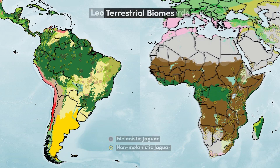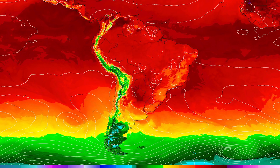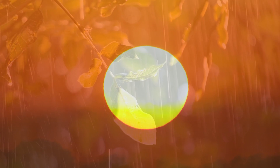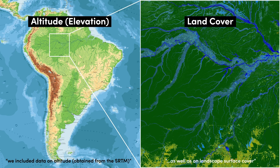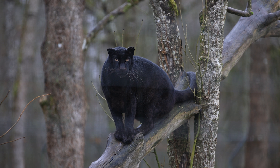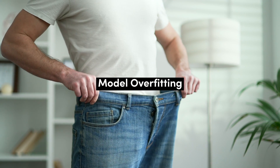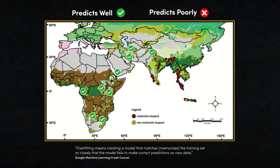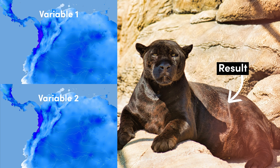Also shown in the maps are terrestrial biomes, which were also used in the analysis. For the environmental data needed for the model, 35 variables were used, which can be grouped into four categories covering temperature, precipitation, solar radiation and moisture, in addition to altitude and land surface cover. The paper also mentions an interesting concept known as model overfitting, which is creating a model that matches or memorises the training set so closely that the model fails to make correct predictions. In the case of this study, environmental variables that are too similar can cause model overfitting.